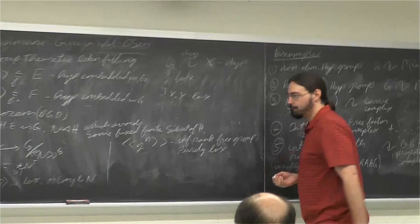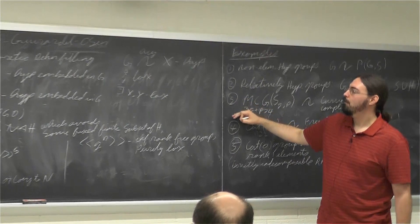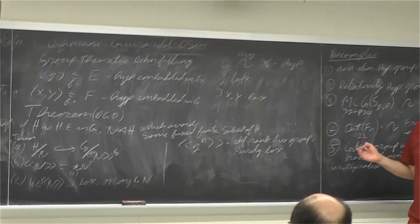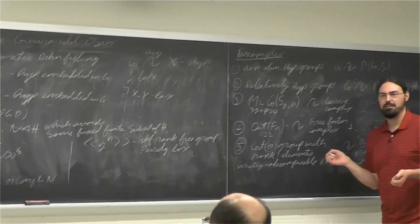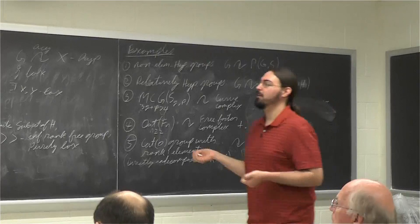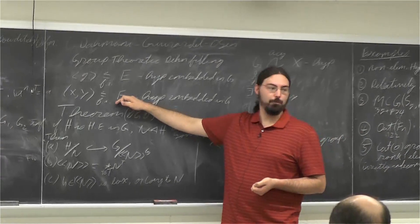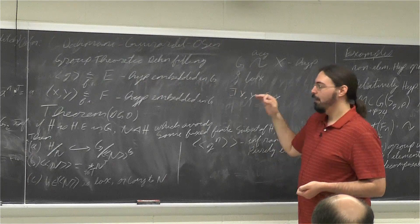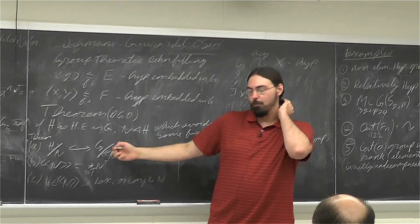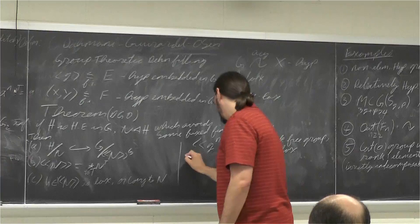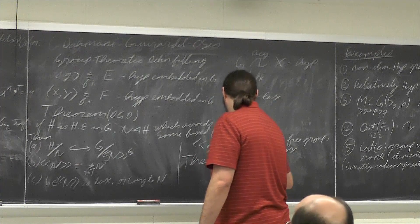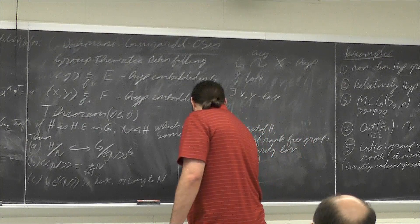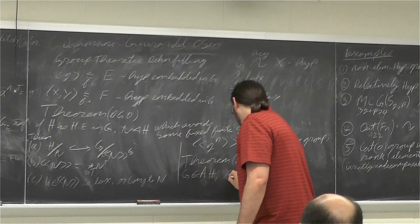Applying this in the second case to the virtually free group: it's well known — a classic result of Higman, Neumann, and Neumann — that every countable group embeds into some two-generated group. This means every countable group embeds into some quotient of the normal closure, and in particular embeds into some quotient of G. So acylindrically hyperbolic groups are SQ-universal — this is Dahmani-Guirardel-Osin.